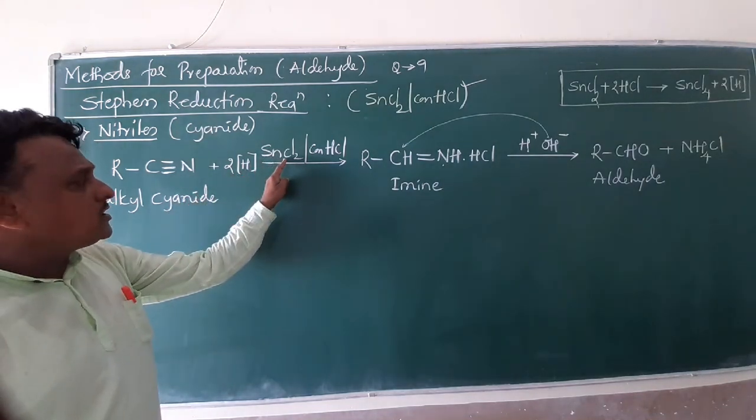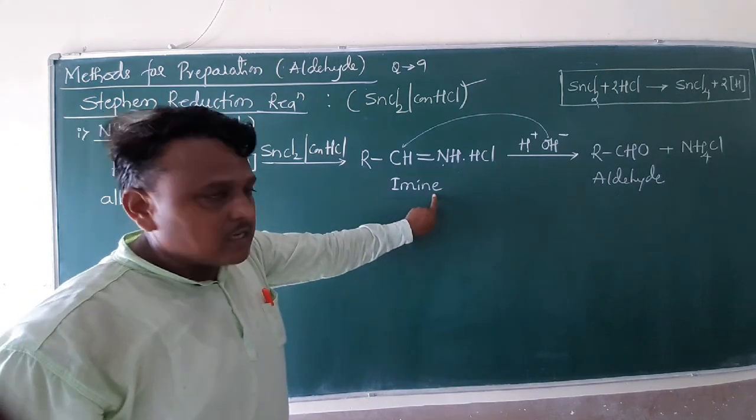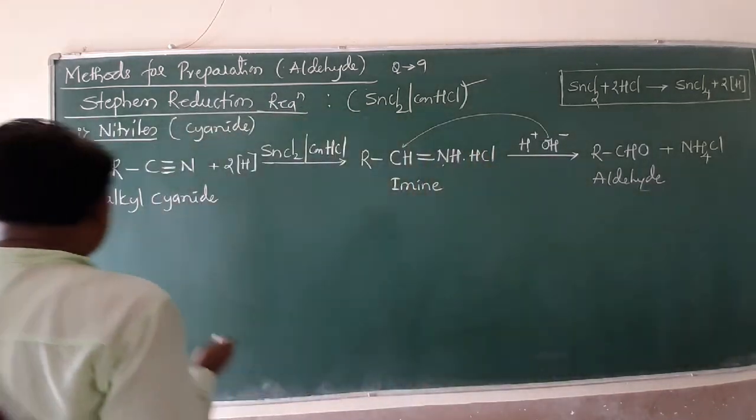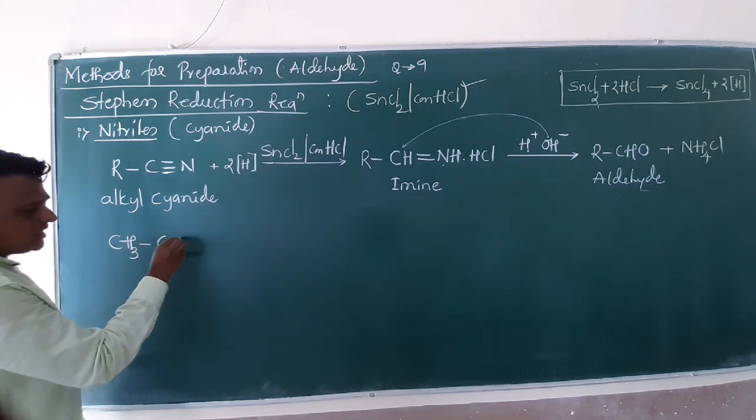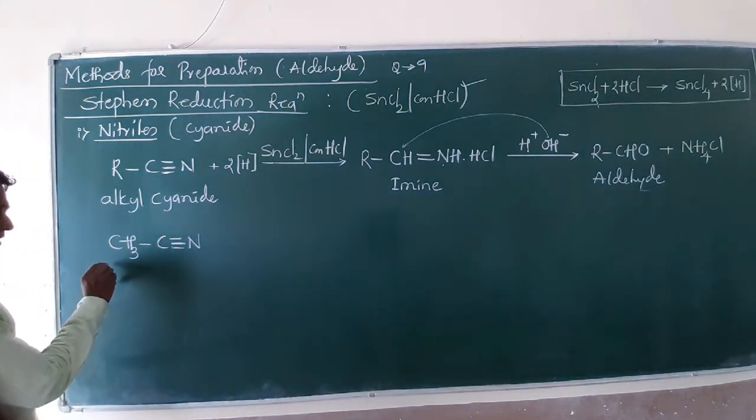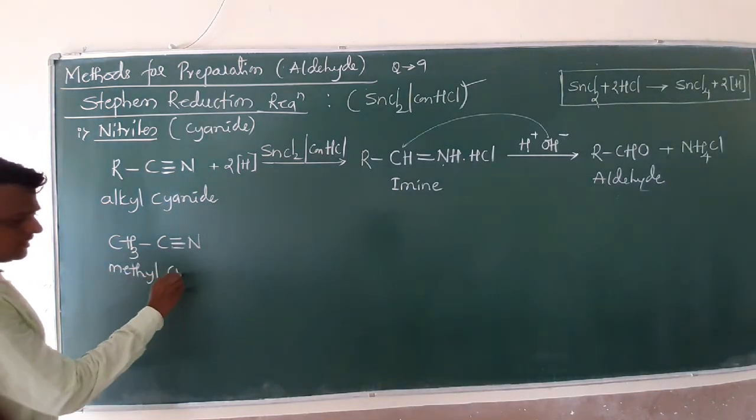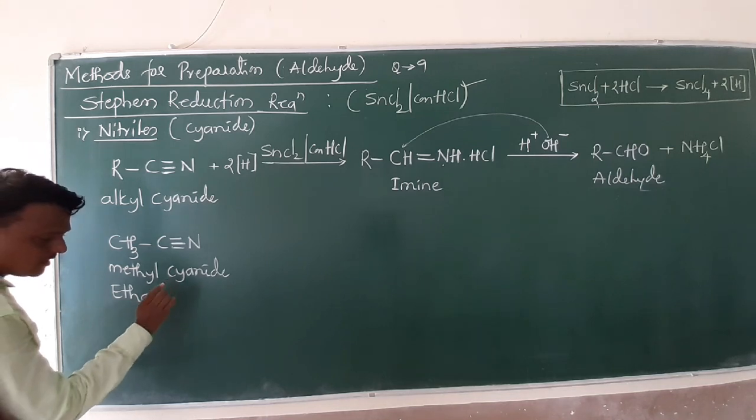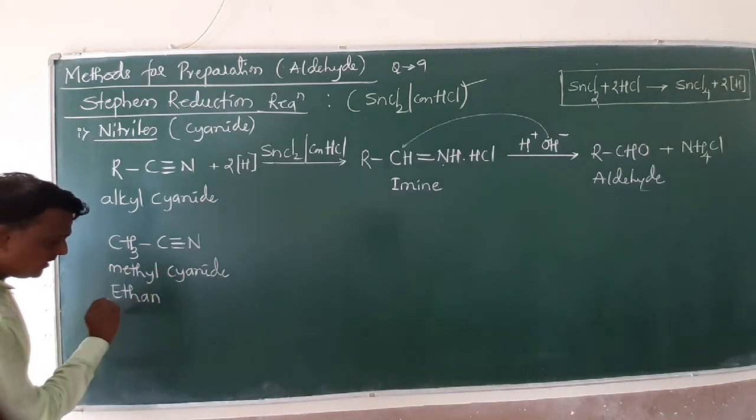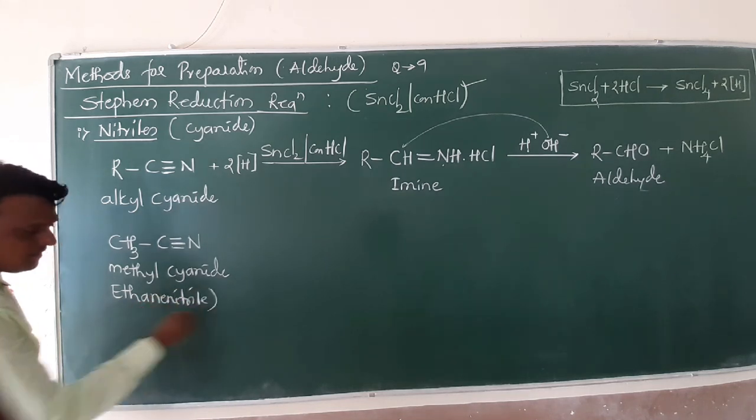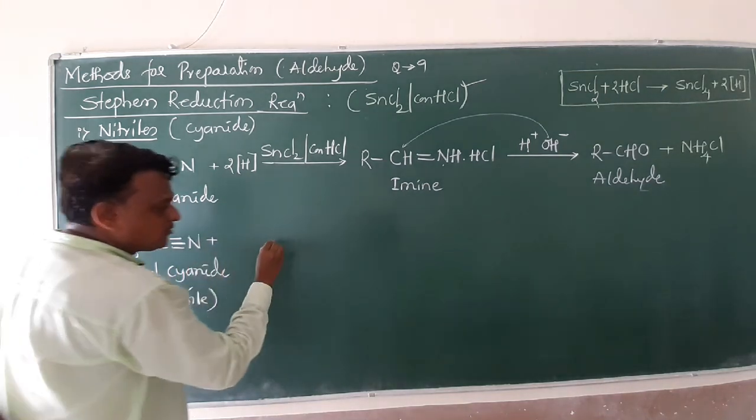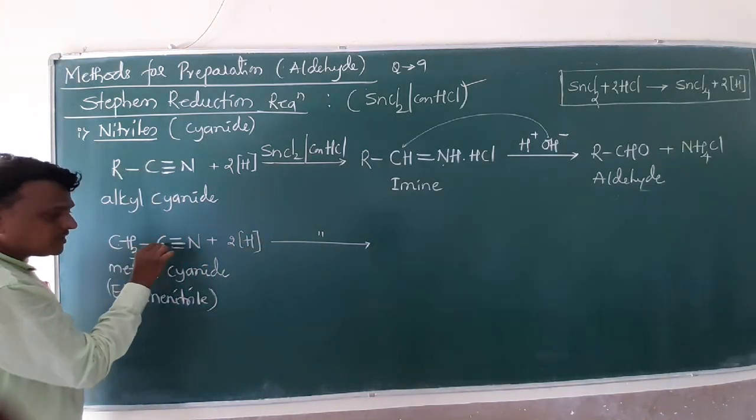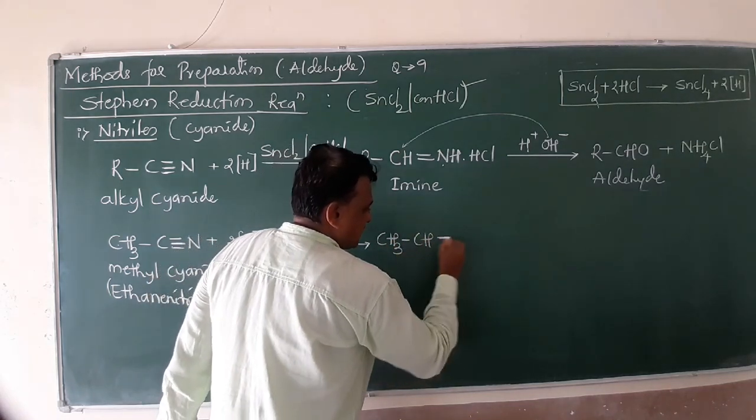We have an example, friends. Keep in your mind, CH3-C≡N. Two carbon atoms. The name of this compound: Methyl cyanide or nitrile. Wonderful name: Ethane nitrile. When this ethane nitrile undergoes the same reduction, they generate two nascent hydrogen. The product of this is CH3-CH double bond N-H.